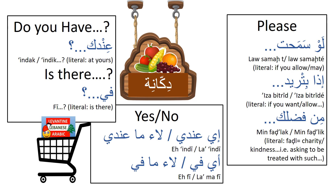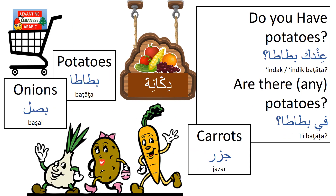'Min fadlak' also means please; 'min fadlik' for a lady — literally 'I'm asking to be treated with your kindness.' To ask if someone has something, say 'endak' followed by the thing you want. For example, 'endak btaata' — do you have potatoes? You can also say 'fii btaata' — are there any potatoes? Both 'endak' and 'fii' are interchangeable here.